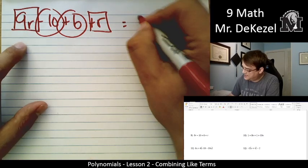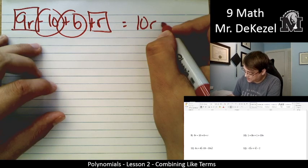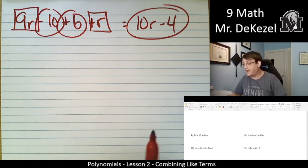9r plus r, that's 10r. And then minus 10 plus 6, that gets us up to minus 4, but it does not cross the number line. 10r minus 4 is our final answer.